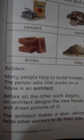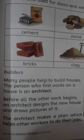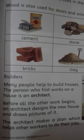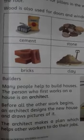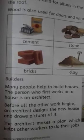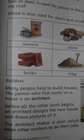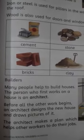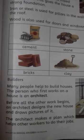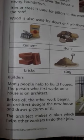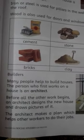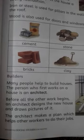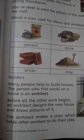Before all other workers begin, an architect designs the new house and draws pictures of it. Architect کا کیا کام ہوتا ہے — جب ایک گھر کی تعمیر کا کام شروع ہونے لگتا ہے تو architect ایک نئے گھر کی تعمیر کے لیے نقشہ بناتا ہے اور pictures draw کرتا ہے۔ The architect makes a plan which helps other workers to do their jobs. Architect ایک plan تیار کرتا ہے جس کی مدد سے دوسرے workers کو اپنے کام کرنے میں آسانی ہو جاتی ہے۔